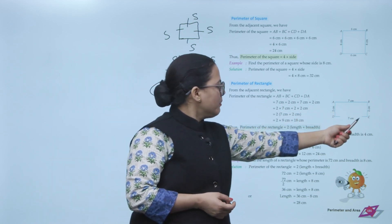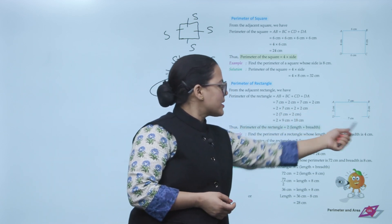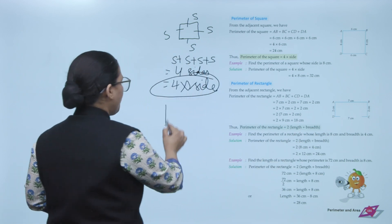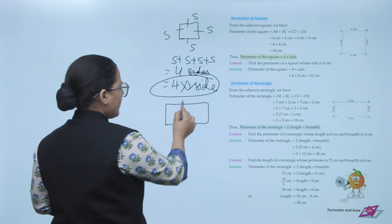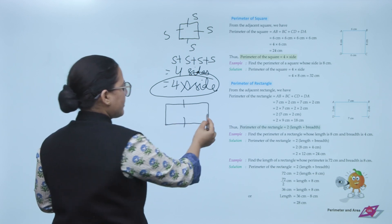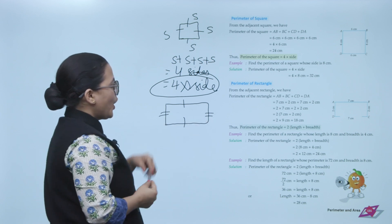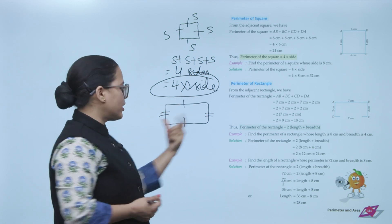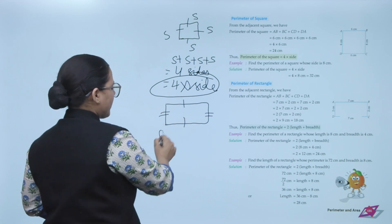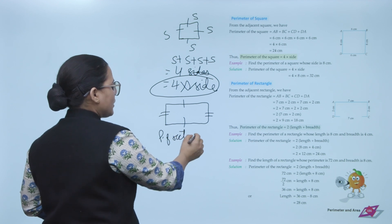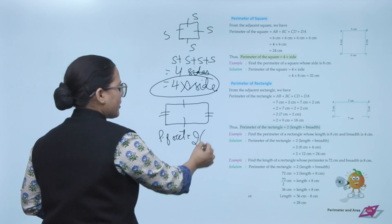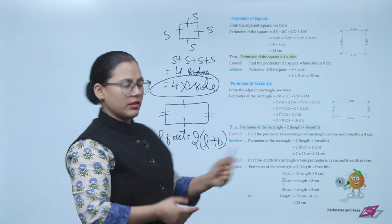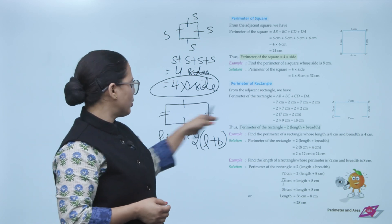Perimeter of a rectangle: from the adjacent rectangle, perimeter equals AB + BC + CD + DA. In a rectangle, opposite sides are equal — this side equals this side, and this side equals this side. Since two lengths are equal and two breadths are equal, the perimeter of a rectangle equals 2 × (length + breadth).